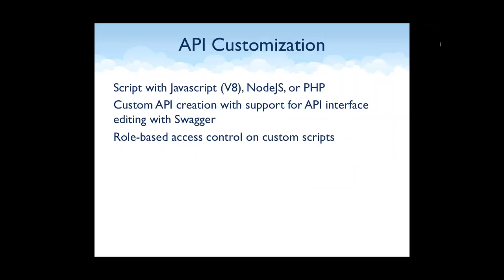API customization is the third area. You can script with JavaScript in a couple of different ways. V8 is a sandboxed engine that runs as a parallel process and scales really well. You can also use Node.js, which is getting really popular, and call Node scripts from DreamFactory. PHP is also available for server-side scripts. These are called event scripts — they're tied to API calls. If you have a SQL database with auto-generated create, read, update, and delete calls, you can tie any script to any of those endpoints in either direction — on the API request or the API response.